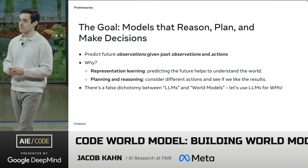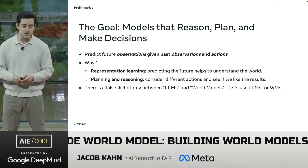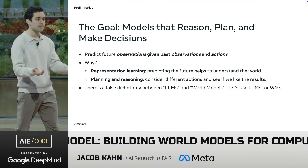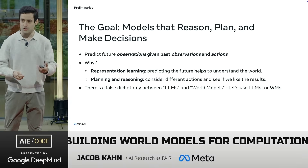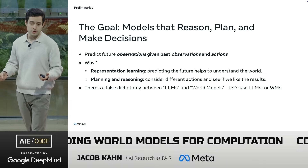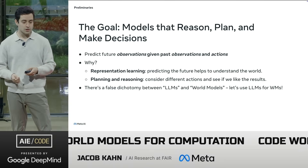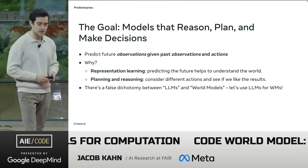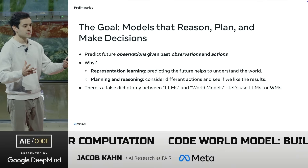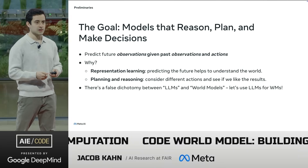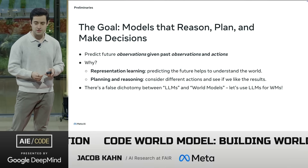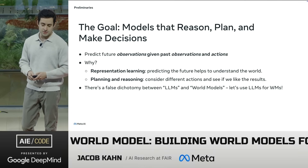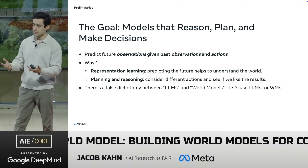Our primary goal with CWM is to build models that reason, plan, and make decisions. We start with code because it's an interesting sandbox in which to think about reasoning — it's constrained, there are certain rules. Our goal is to predict future observations given past observations and actions. That's what it means to build a world model in some sense. We can learn good representations if we learn a mapping between observations and the future, which eventually leads to planning, reasoning, and considering different actions for decisions.